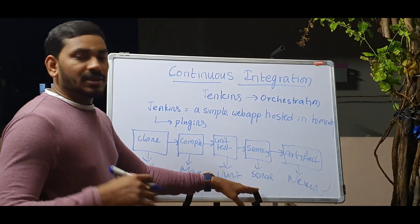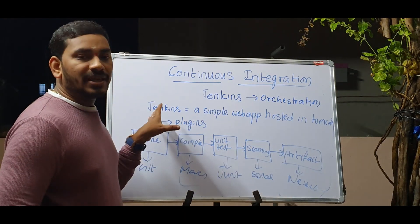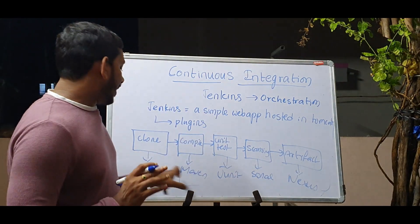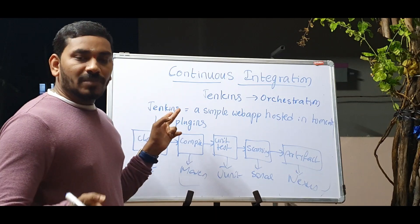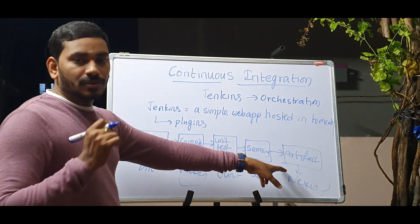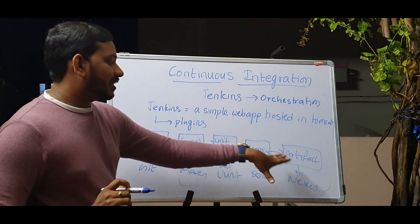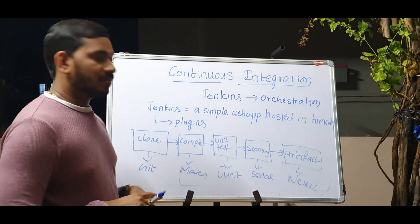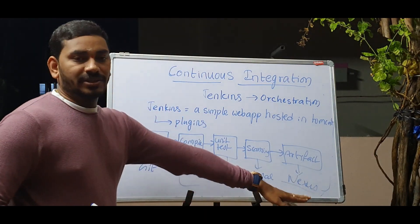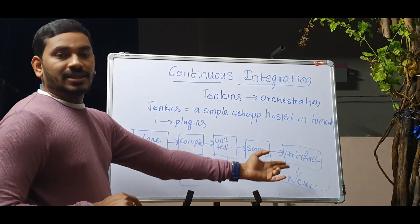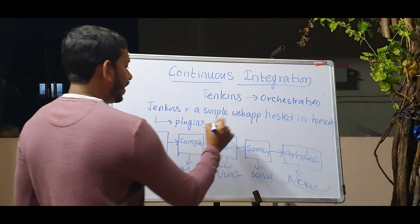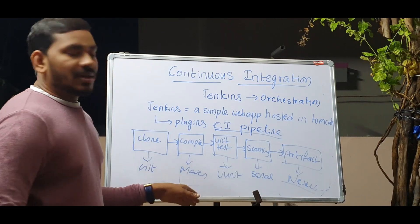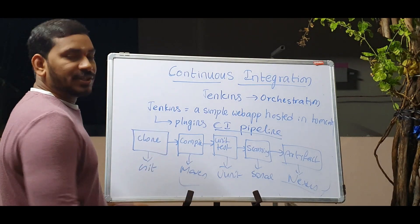If you develop a plugin, you can add custom functionality to Jenkins and to the pipeline. Mostly the plugins for these stages are already developed — we just need to install and configure them. We install the required plugins, run Jenkins, and configure the CI pipeline. This is the Continuous Integration pipeline. The next part will discuss Continuous Deployment.